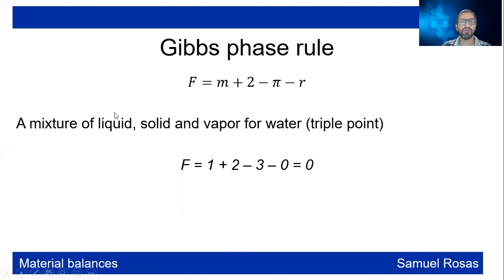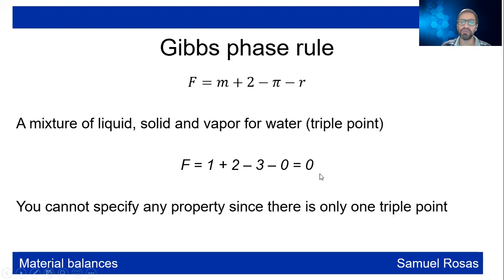For a mixture of liquid, solid, and vapor for pure water: one component plus 2, minus 3 phases, minus 0 reactions, yields 0 degrees of freedom. This means you cannot specify any property — it is completely fixed because there is only one triple point for water.